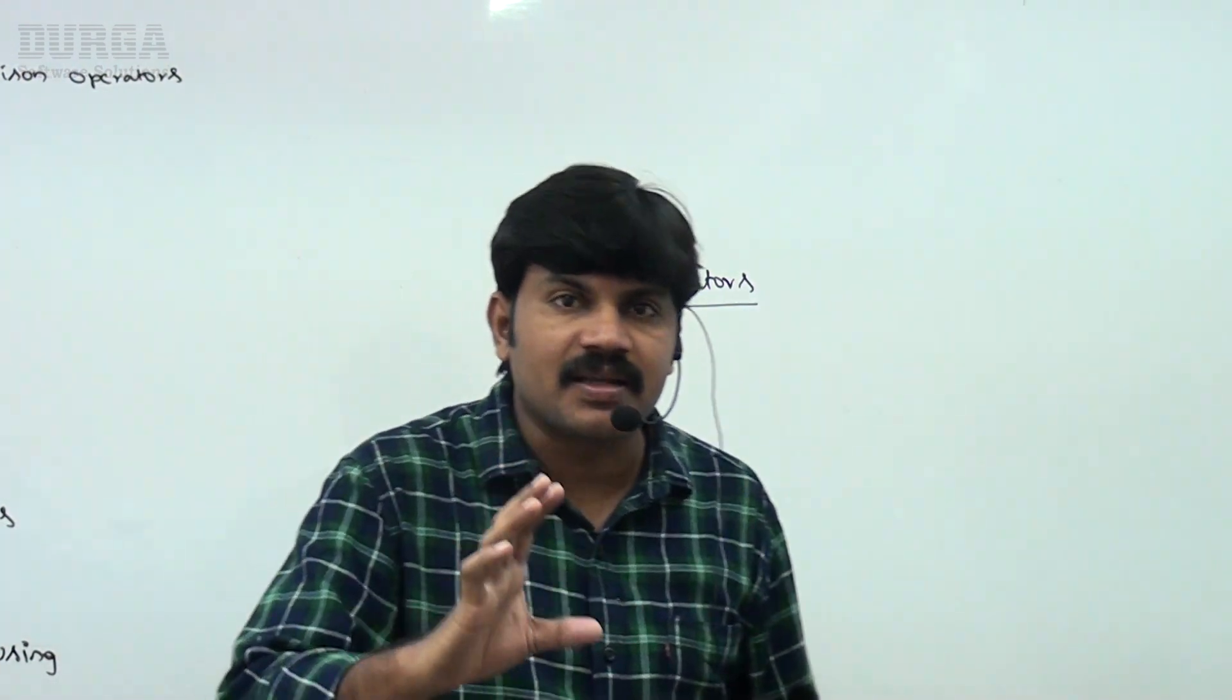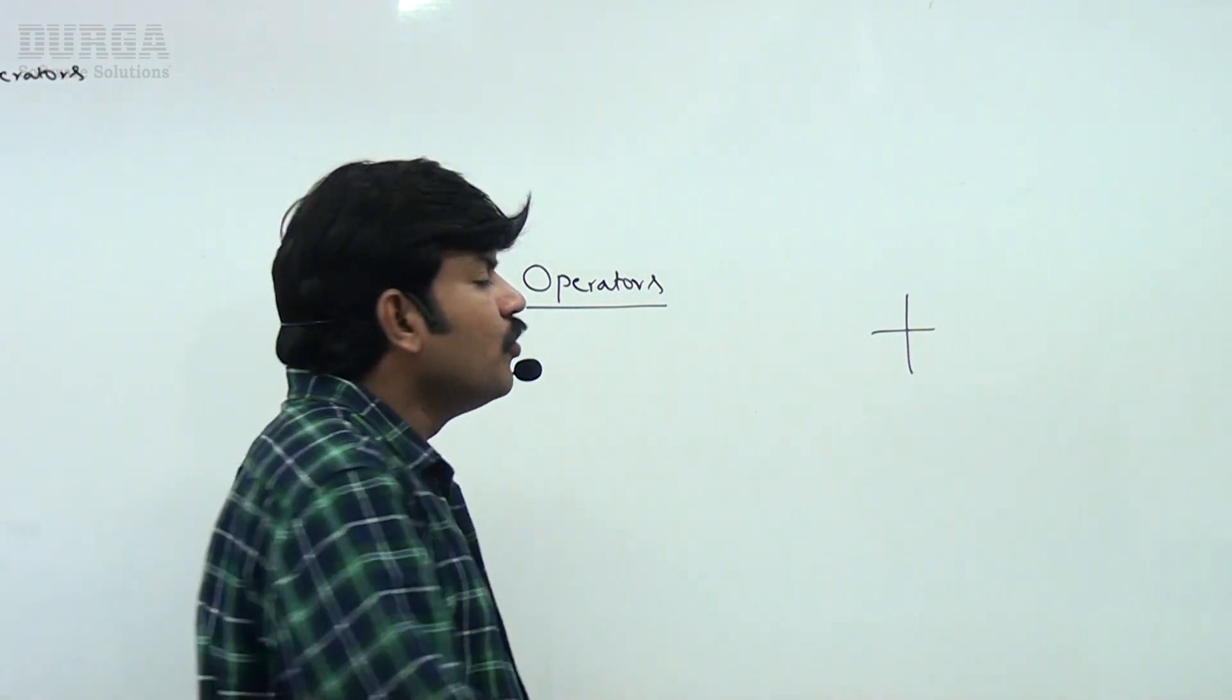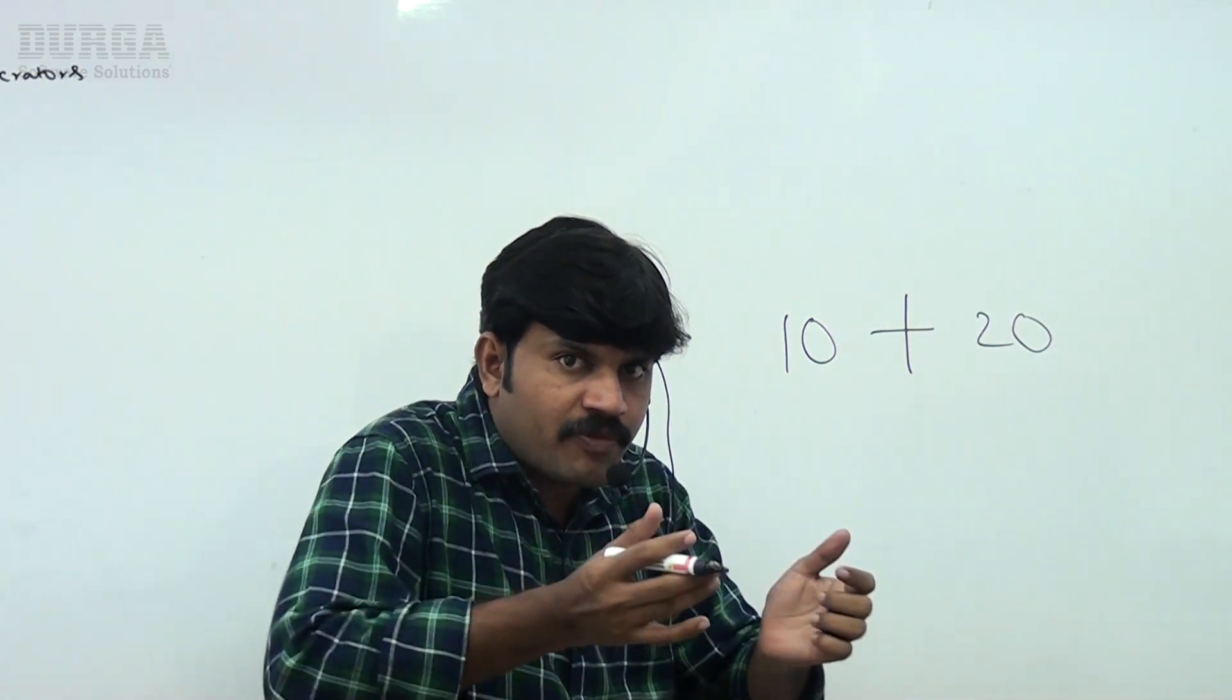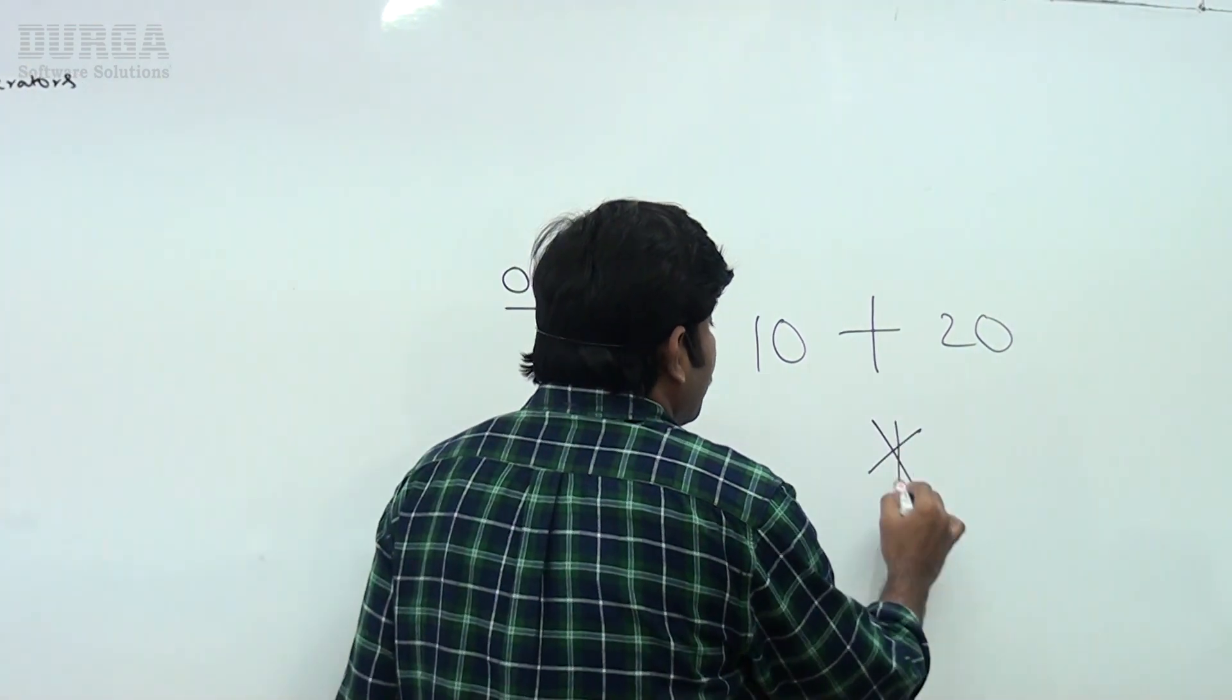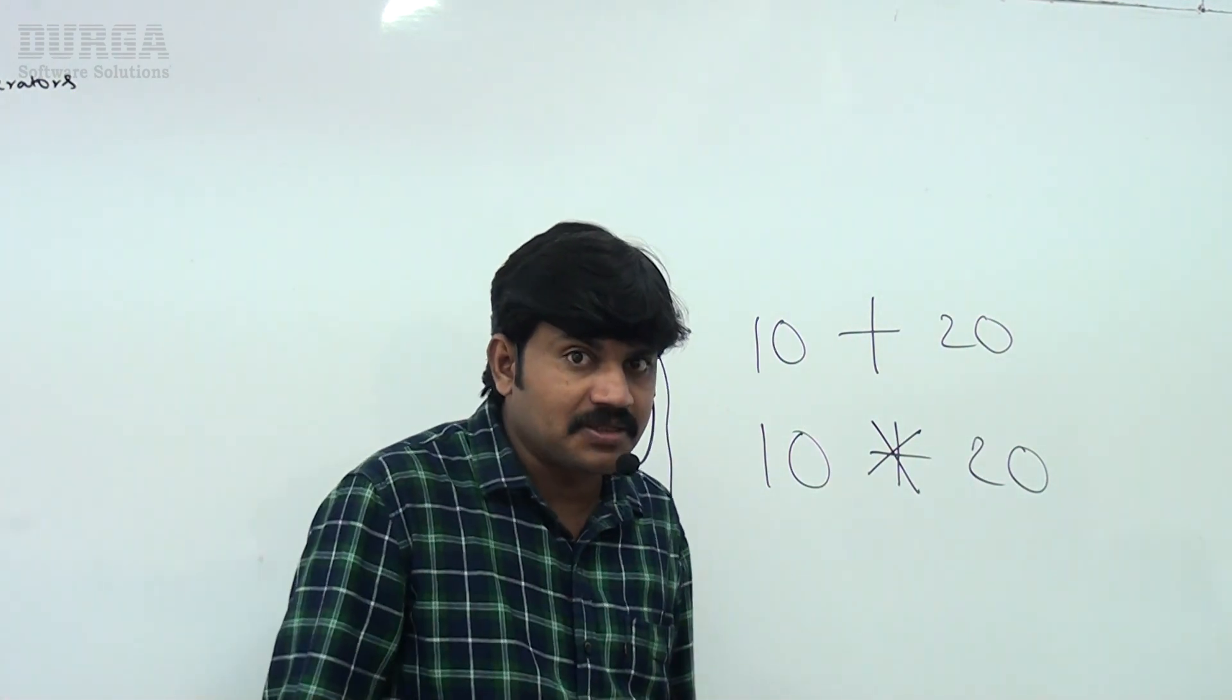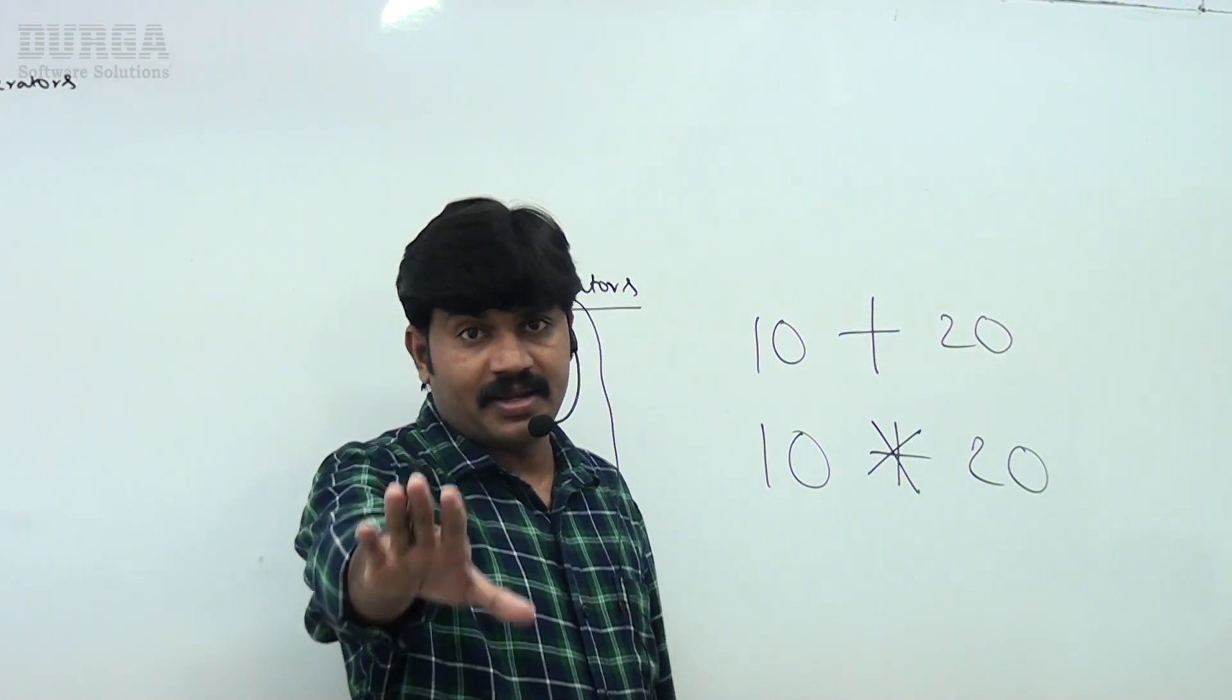The same way, the Python symbol which is responsible to perform certain activity is considered as an operator. If plus symbol is there, it is an operator responsible to perform automatic addition. 10 plus 20, this plus performs automatic addition, result becomes 30. Similarly, star operator for 10 star 20 performs multiplication operation. The symbol responsible to perform certain activity is considered as an operator.